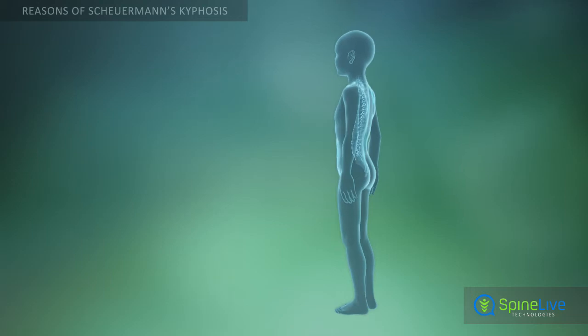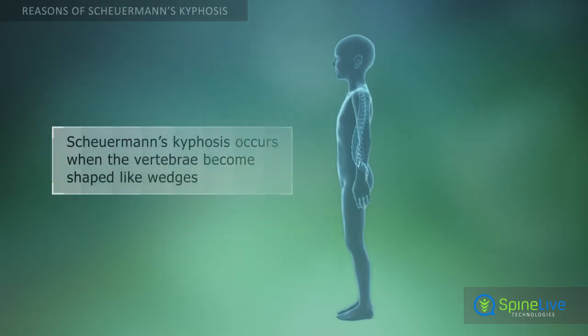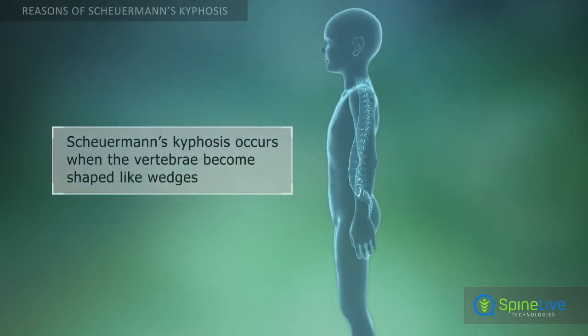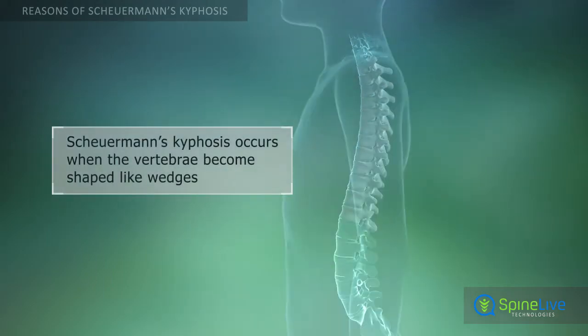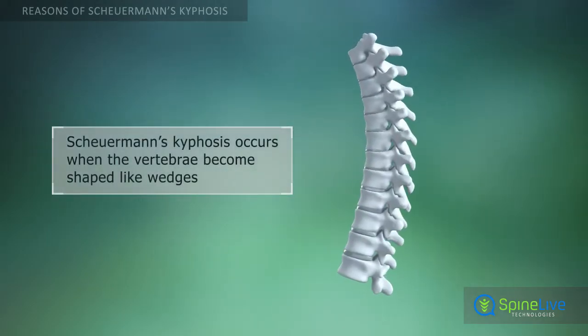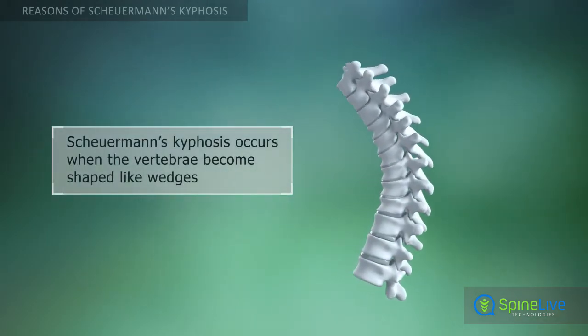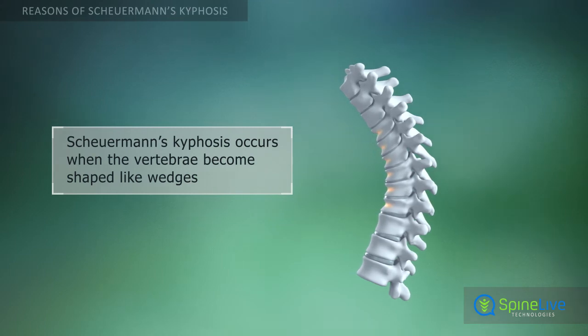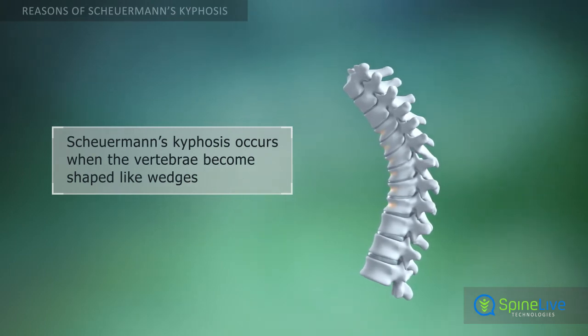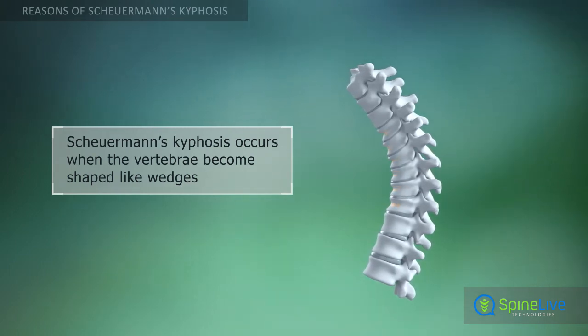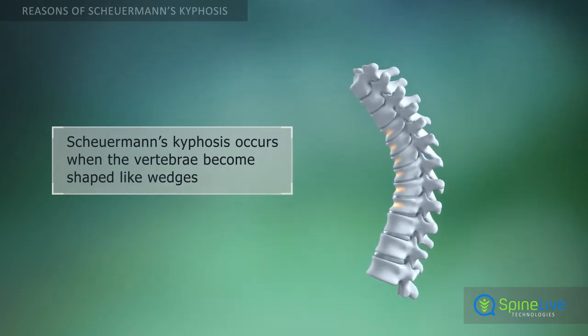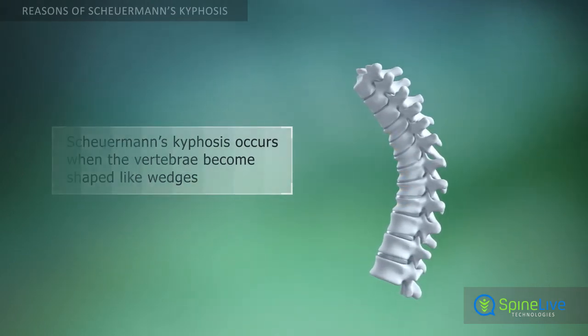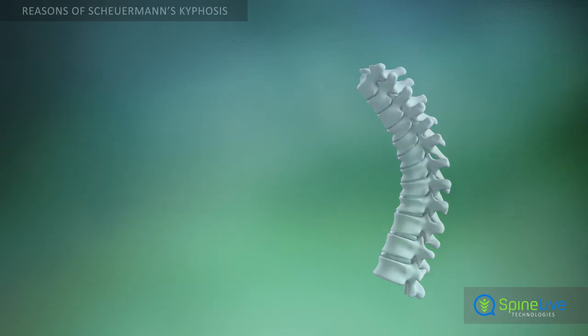The vertebrae of a healthy spine are shaped like cylinders and are stacked one on top of another. Scheuermann's kyphosis occurs when the bones in the thoracic region of the spine become shaped like wedges.